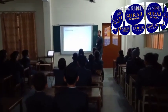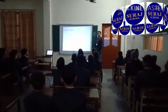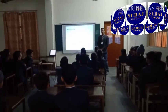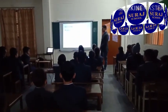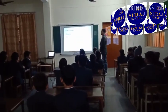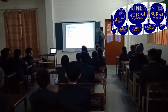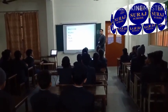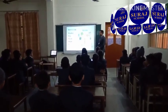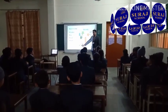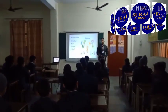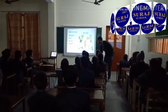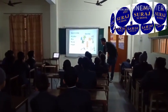Next topic is body covering. There are mainly four types of body covering: feathers, fur, scales, and shells. Let's study about them with examples. Feathers are mainly found in birds.